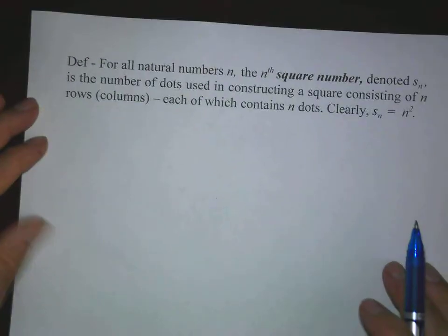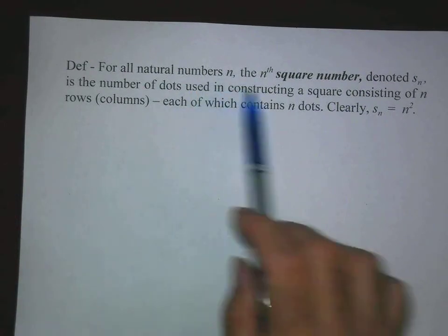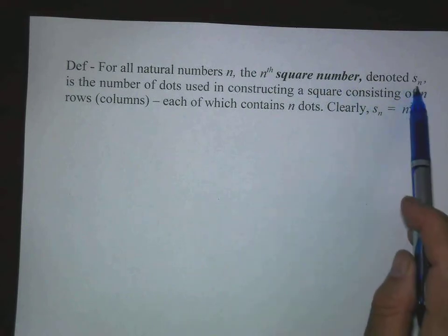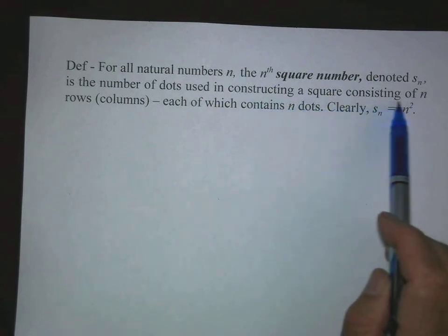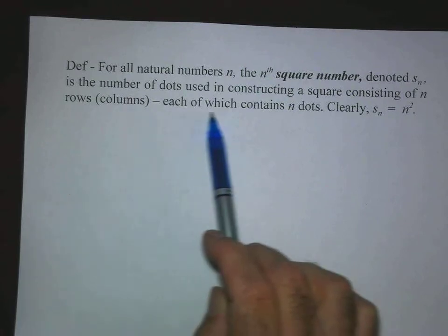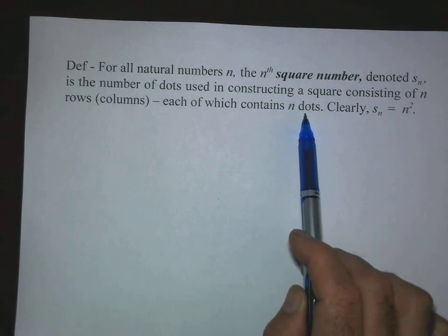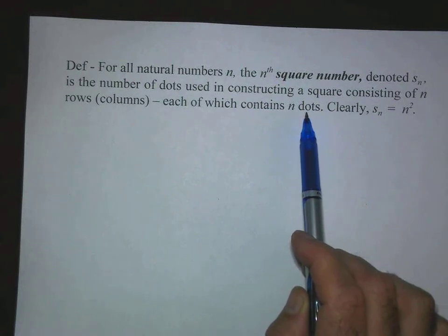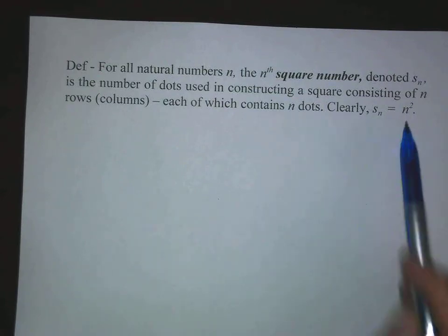Now let's define square numbers. For all natural numbers n, the nth square number, denoted S sub n, is the number of dots used in constructing a square consisting of n rows and n columns, each of which contains n dots. So we have a square made out of n rows of n dots, or n columns of n dots. So the nth square number clearly is n squared.